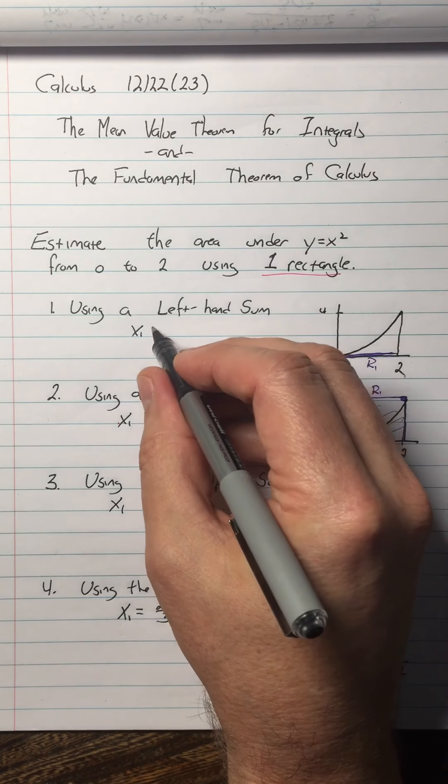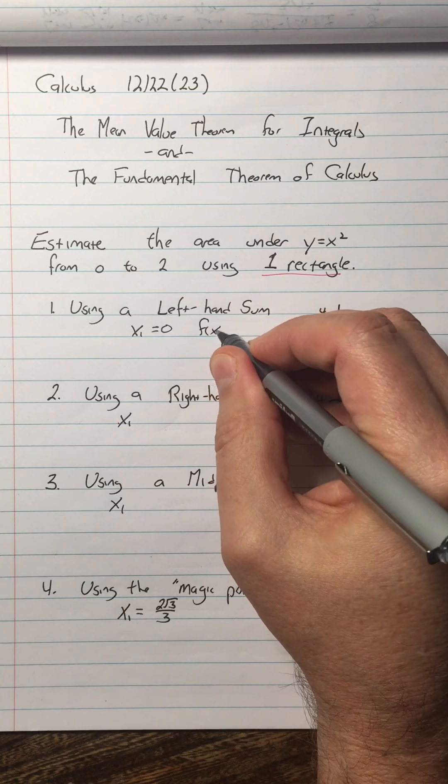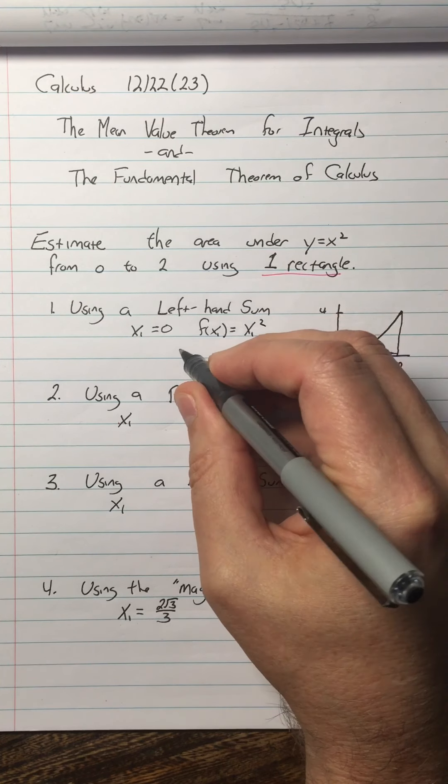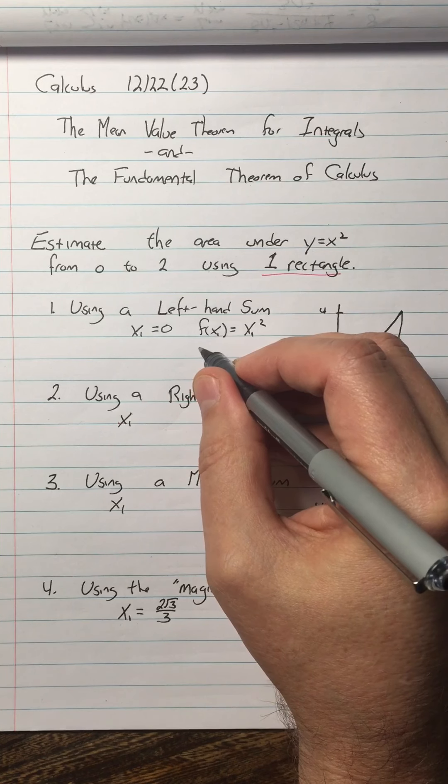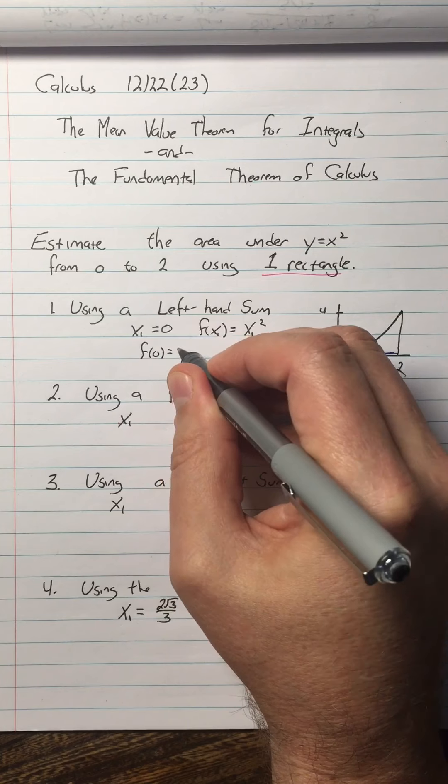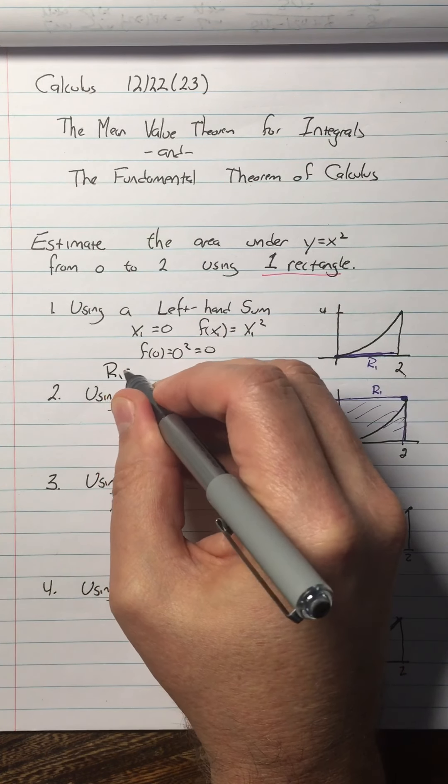So in this case, the x1 is zero, and so f of x1 is equal to x1 squared. So f of zero equals zero squared equals zero.